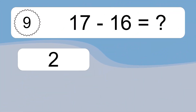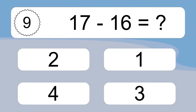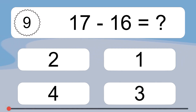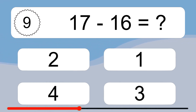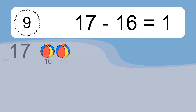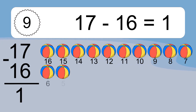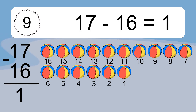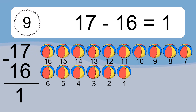17 minus 16 equals what? 17 minus 16 equals 1. Let's count it: 16, 15, 14, 13, 12, 11, 10, 9, 8, 7, 6, 5, 4, 3, 2, 1.